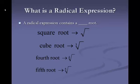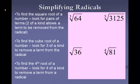So what is a radical expression? A radical expression is any kind of root — a square root, cube root, fourth root, fifth root, sixth root, any kind of root. If it's a square root, you're just going to see the little house with no number. A cube root is going to have a 3, fourth root a little 4, and a fifth root a little 5, and so on. The little number out in front of the house tells you what kind of root you have.